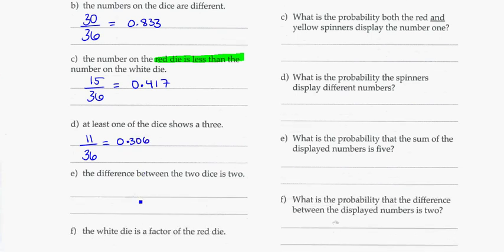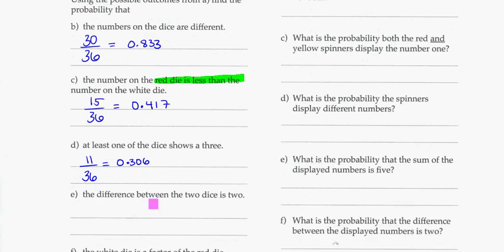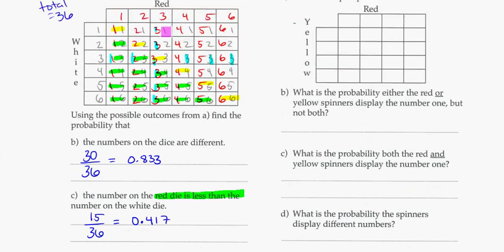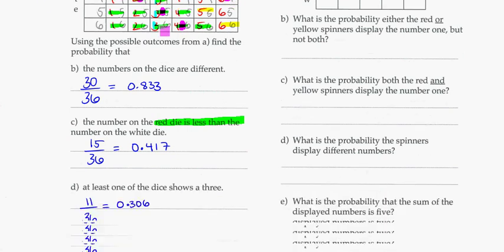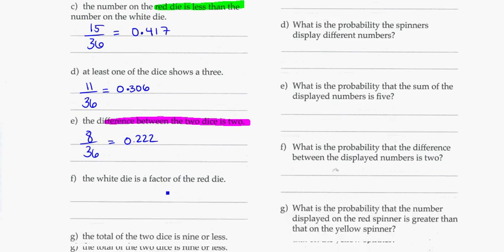Remember, I'm not counting the one where the 3 comes up on both of them at the same time. Don't double count that. So you get 11 out of the 36, which would be 0.306. The next question: the difference between the two dice is 2. What's all the ways that that can happen? 3 and 1 gives me 2, 4 and 2, 5 and 3, 6 and 4. And then looking at it from the other combinations, 4 and 6, 3 and 5, 4 and 2, 3 and 1. So that's 1, 2, 3, 4, 5, 6, 7, 8 ways that I can have a difference of 2. 8 out of 36, which gives us 0.222.